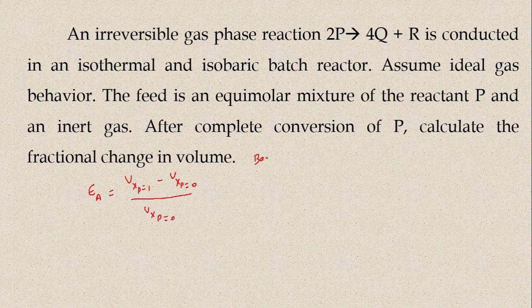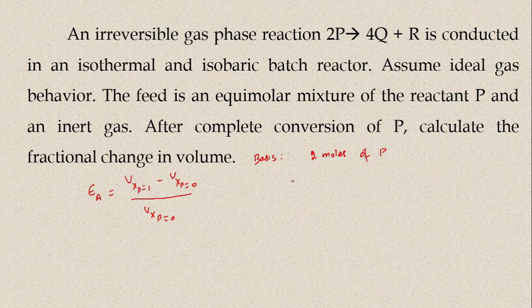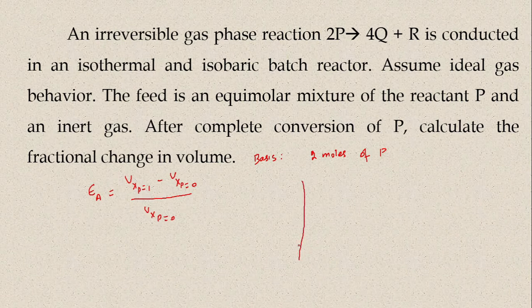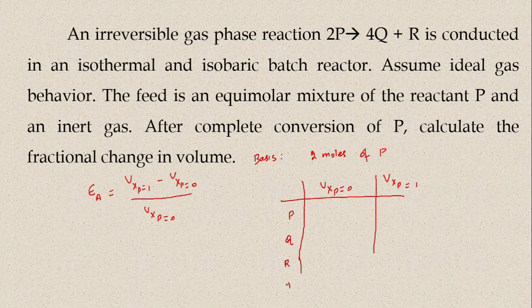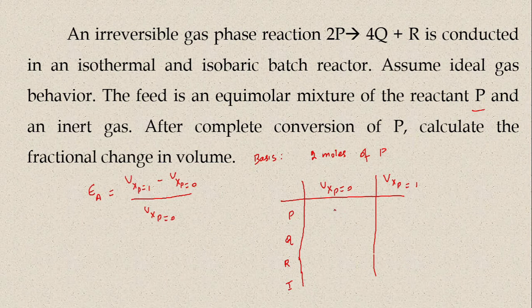Let me take a basis of 2 moles of P. Now let me determine V when conversion equals 1 and V when conversion equals 0. We have an equimolar mixture of reactant P and the inert. Therefore, assuming 2 moles of P, we also have 2 moles of inert. At the end of the reaction, the inert won't participate, so I write 2 for the inert.